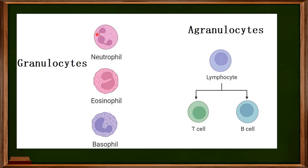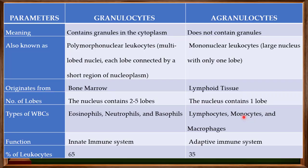When you look at agranulocytes like the T cells and B cells, you can see there is only a single lobe or a large single nucleus in these cells. That is another major difference: granulocytes are known as polymorphonuclear leukocytes, while agranulocytes are known as mononuclear leukocytes.